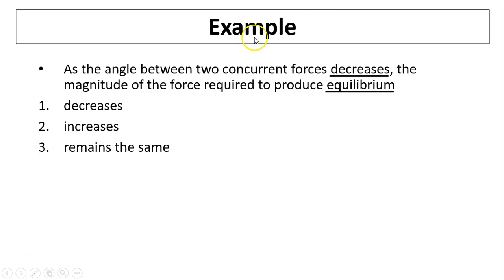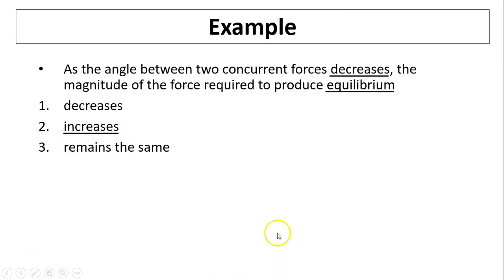Example: as the angle between two concurrent forces decreases, what happens to the magnitude of the force required to produce equilibrium? The force producing equilibrium is called the equilibrant, which is the opposite of the resultant. When the angle between the two forces decreases, the resultant increases. If the resultant increases, the equilibrant has to increase. So the answer is that it increases.